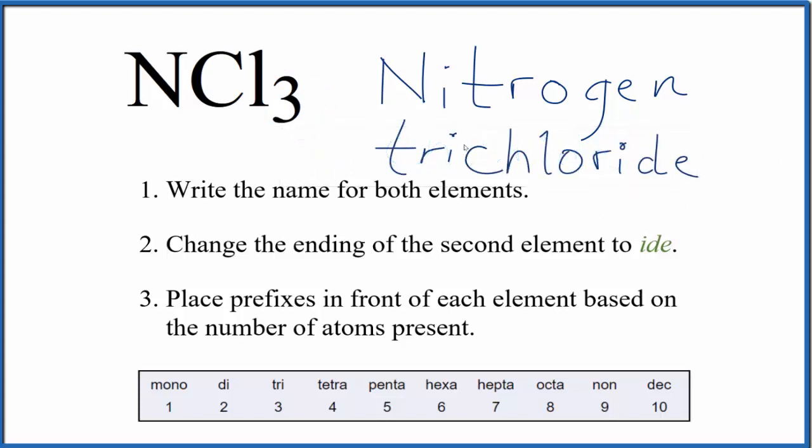If you were given the name, you'd know that nitrogen trichloride was NCl₃. You have nitrogen. 'Tri' means three of the chlorine atoms.